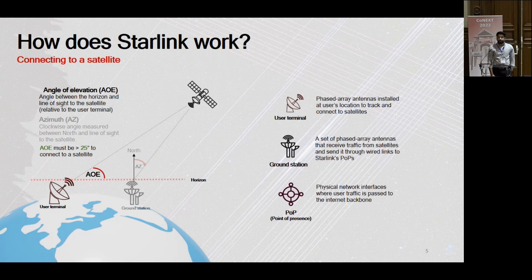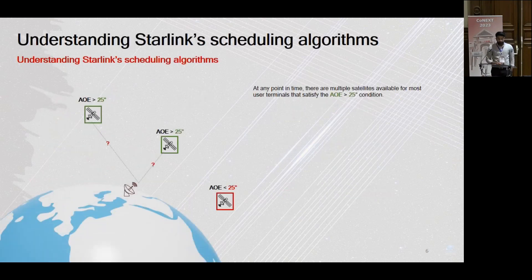For a user terminal to be able to connect to a satellite, the satellite must be at least 25 degrees above the horizon — so its angle of elevation must be greater than or equal to 25 degrees. That's the condition set by Starlink. The main question we're trying to answer is that at any point in time, there are a bunch of satellites which satisfy this constraint, so many satellites are available above the angle of elevation of 25 degrees.